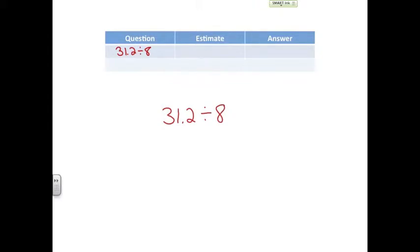When we estimate division, we want to take a look at the first two digits and find the closest multiple. So let's look at the digits 3 and 1. What multiple of 8 is this number closest to?